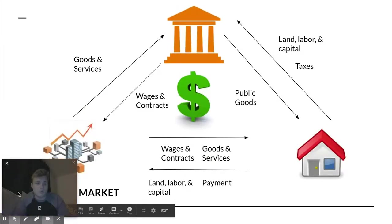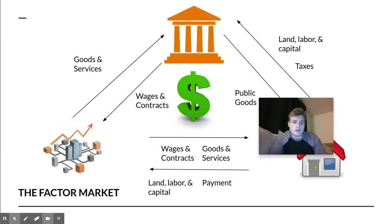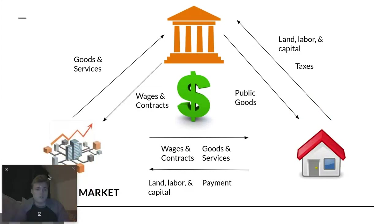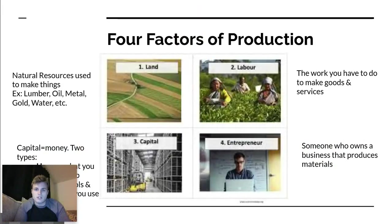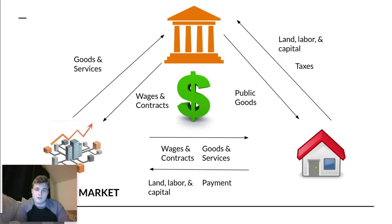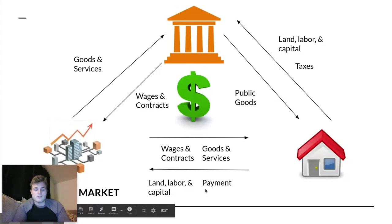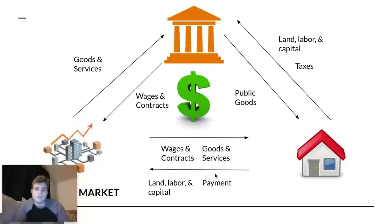If I was to show you a more accurate picture of the factor market, you would see that there are three different parties — this picture is better and more accurate than the previous one. All three of these parties are interacting with each other constantly, day in and day out. Right now as you're watching this video, it's happening — people are making things for the economy. In each relationship, households provide money and land, labor, and capital to firms, who in exchange give households goods and services, as well as wages and contracts.